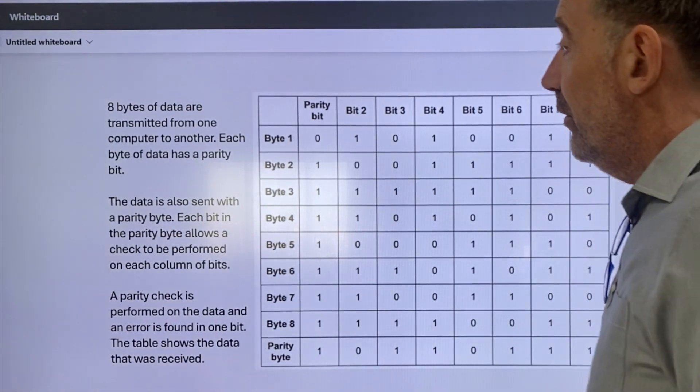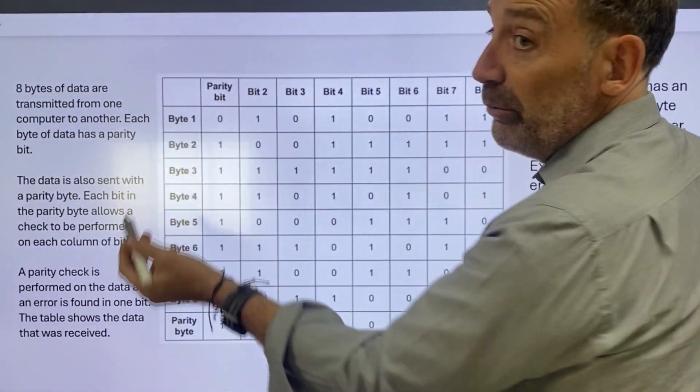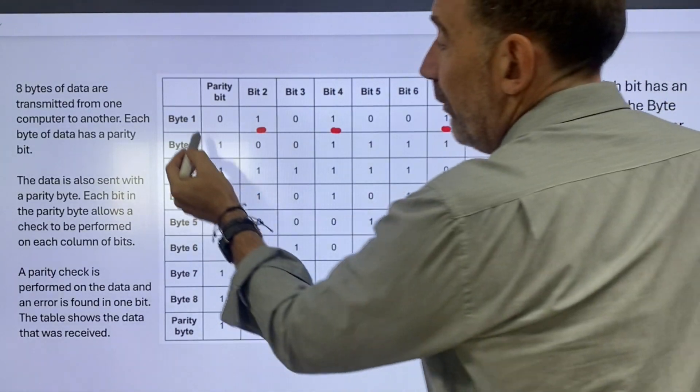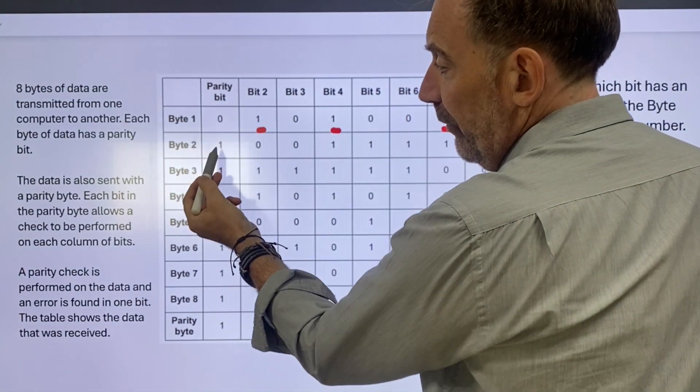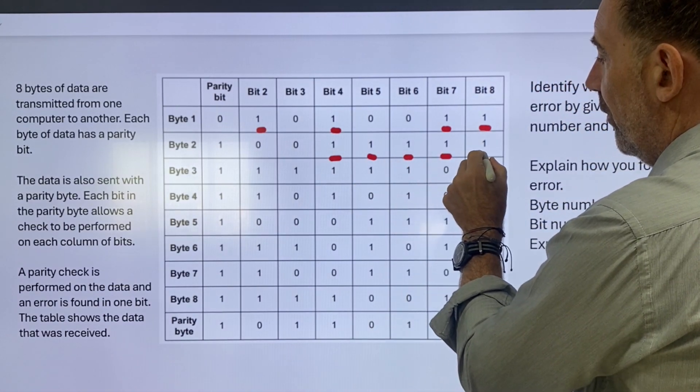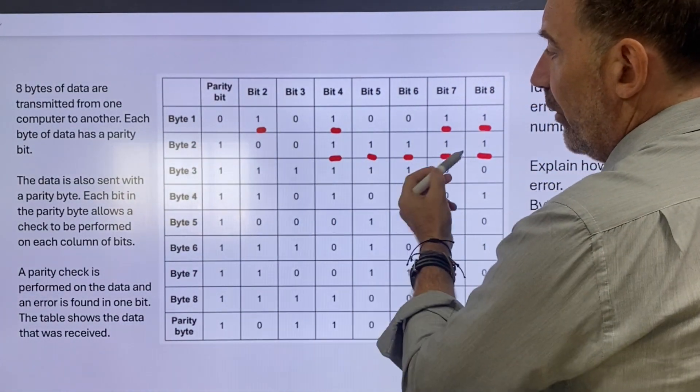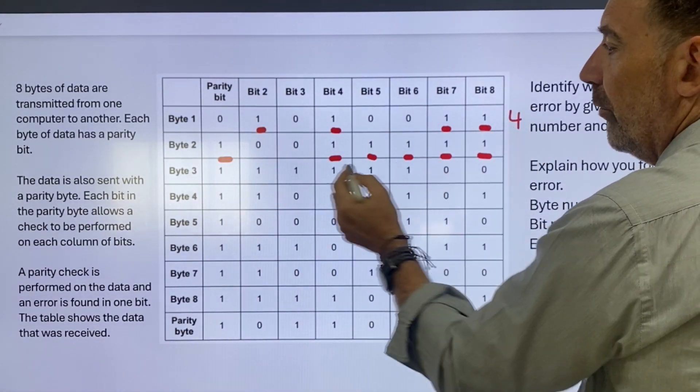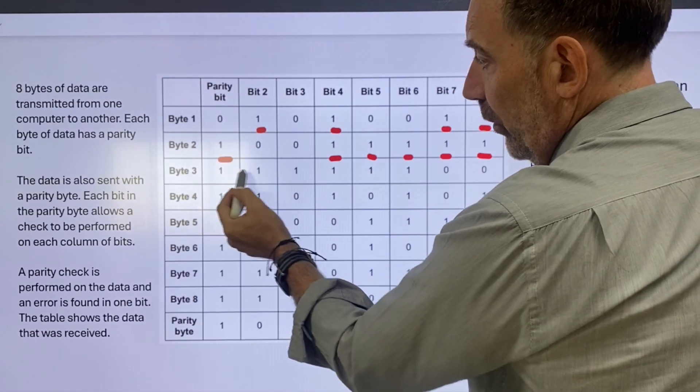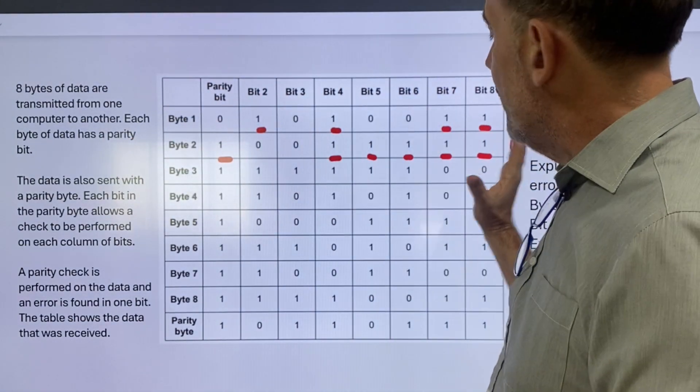So basically we're going to count the bits. For example, in byte one, we've got one, two, three, four. Now we've not changed the parity bit. But in here we've changed the parity bit to a one. Why have we done that? Because we've got one, two, three, four, five. So if these two are correct, I'm going to go through some more. So one, two, three, four in that one. We've got one, two, three, four, five, six in that one. Here we've got one parity bit again. One, two, three, four, five, six in that one. So by law of averages, we can say that they're using even parity.